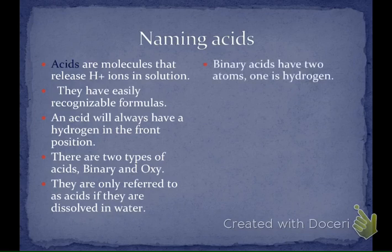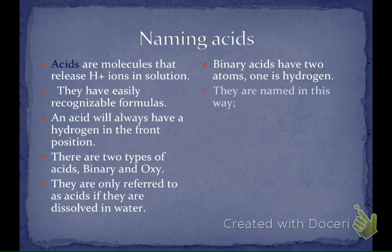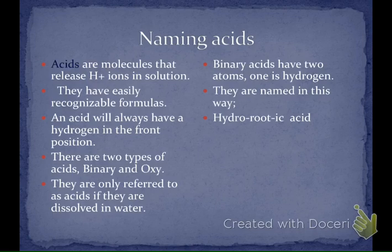Binary acids have two atoms — 'bi' is two. One of them has to be hydrogen and that hydrogen has to be in the first position. We name them like this: 'hydro' for the hydrogen, then we take the nonmetal — probably a halogen — use just the root part of that nonmetal, change the ending to '-ic', and add the word 'acid'.